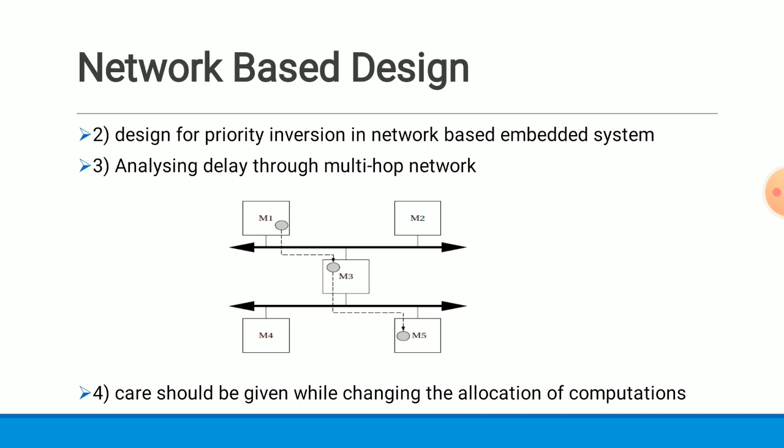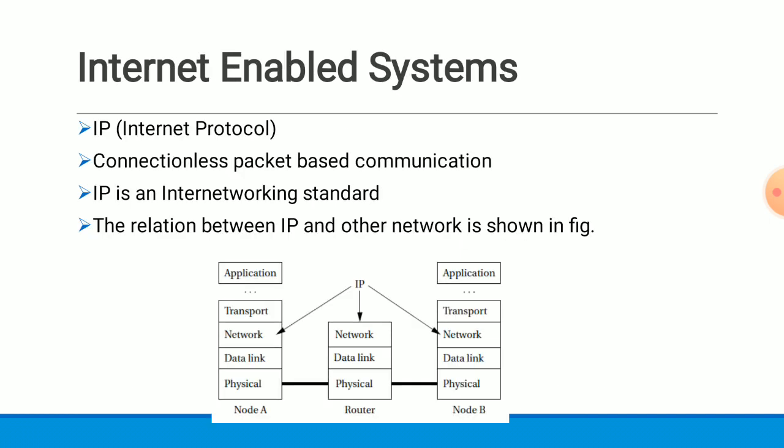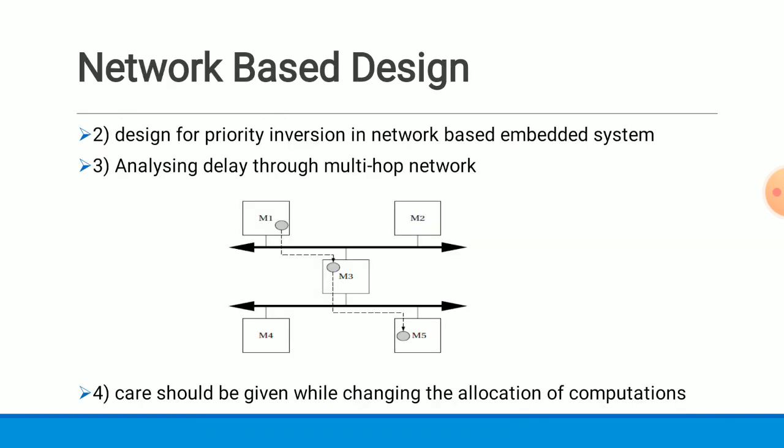The fourth consideration is that scheduling and allocation of computations and communications are clearly interrelated. Care should be given when changing the allocation of computation, because that will affect the scheduling. That covers network based design — the key things to consider when designing a network based embedded system.